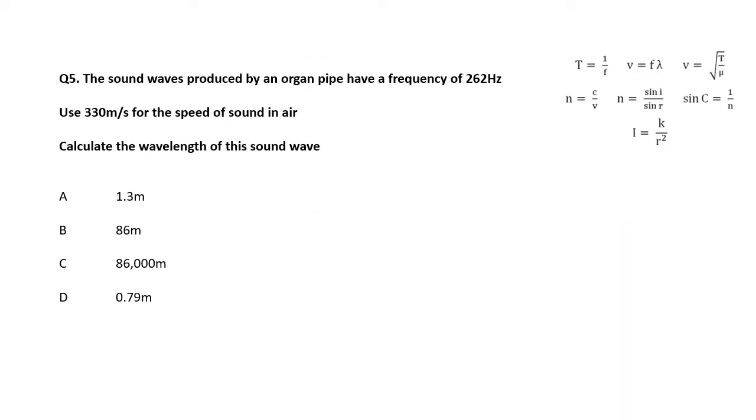The speed of sound produced by an organ pipe has a frequency of that. We're going to use that for the speed of sound in air. Calculate the wavelength. So again, we're going to use the wave equation. V equals F lambda. So lambda equals V over F. And the velocity is 330 divided by 262, which equals 1.3.